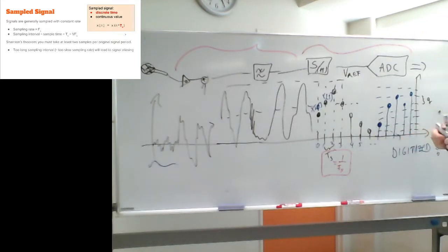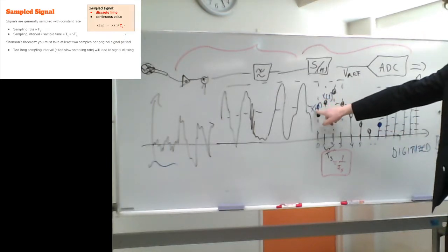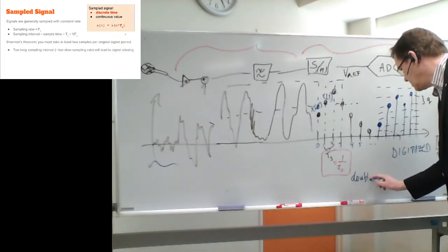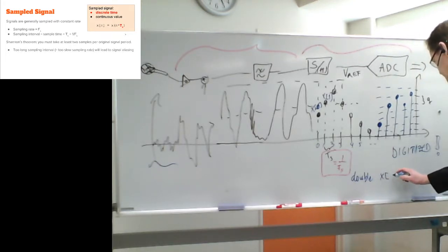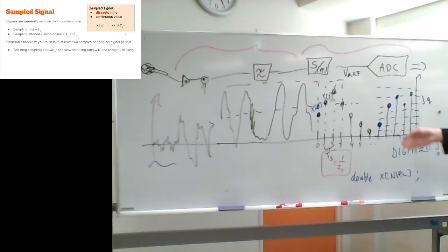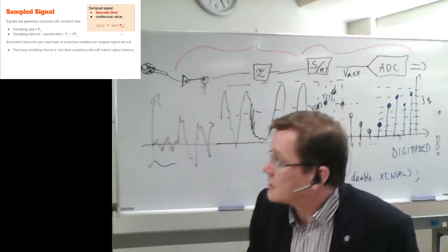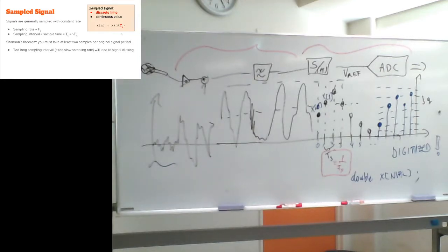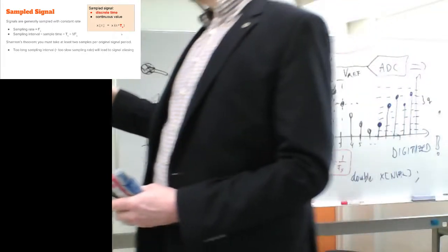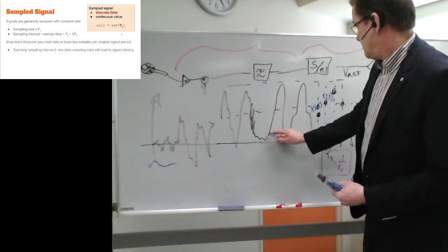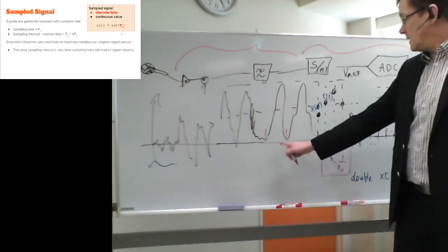You can put the sampled signal into a table — like a C-type array, for example 'double x[]' — and find the corresponding time value from the index. Shannon's theorem states you need at least two samples per signal period. Here you can see a full period of a signal requiring at least two samples.